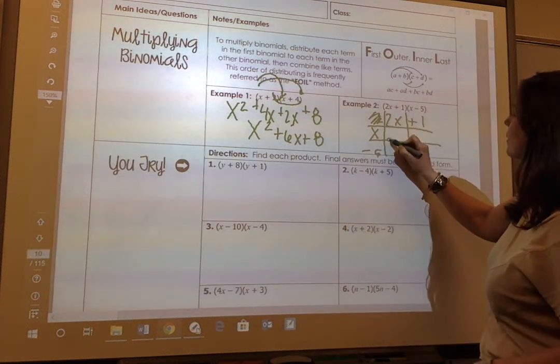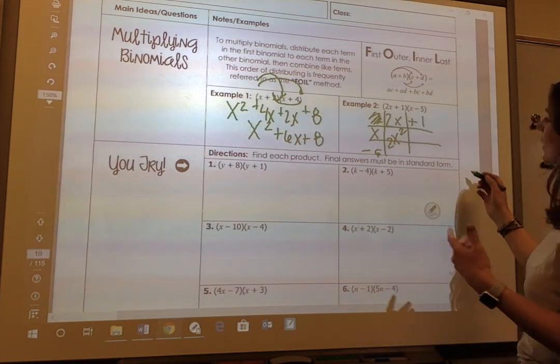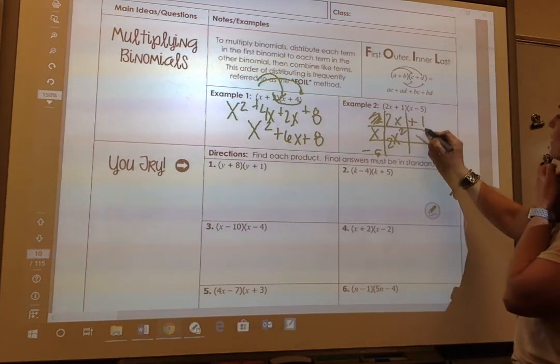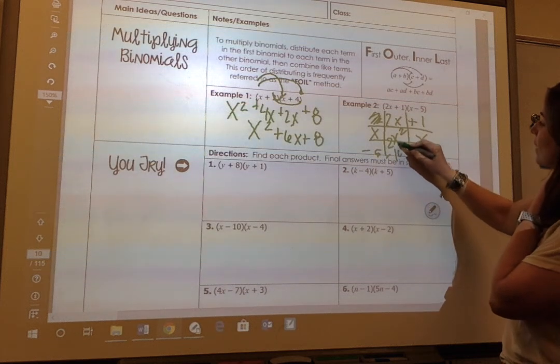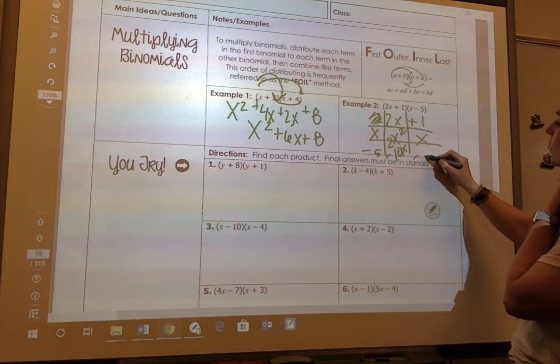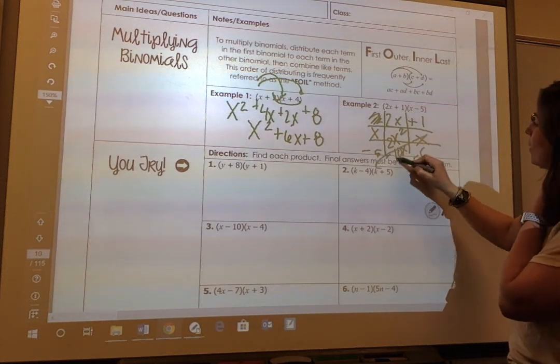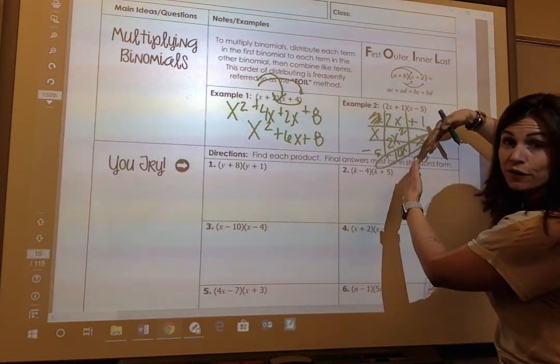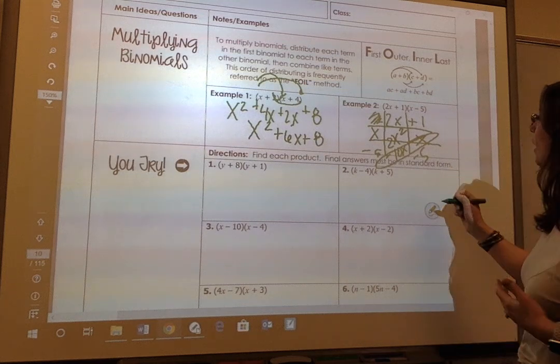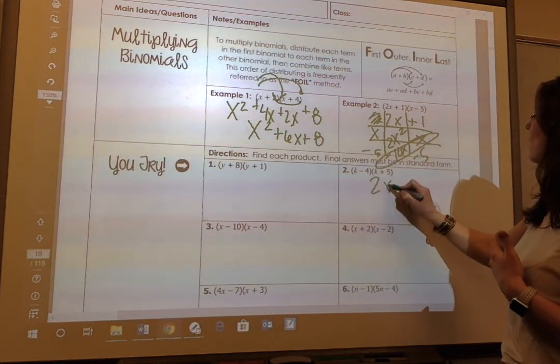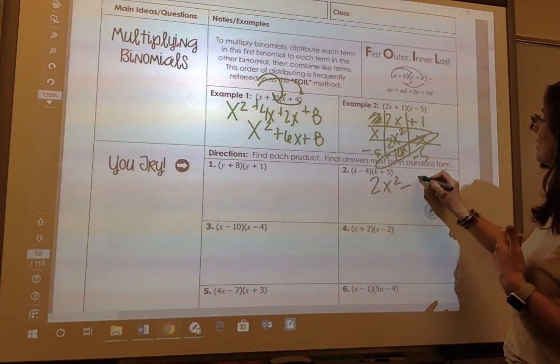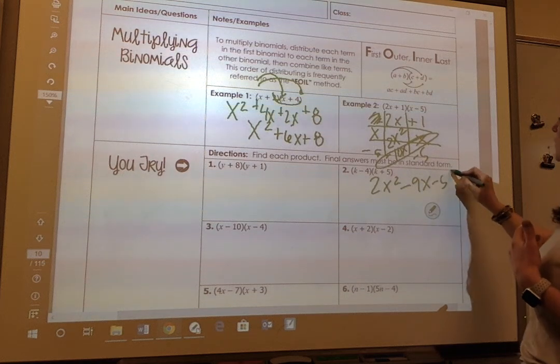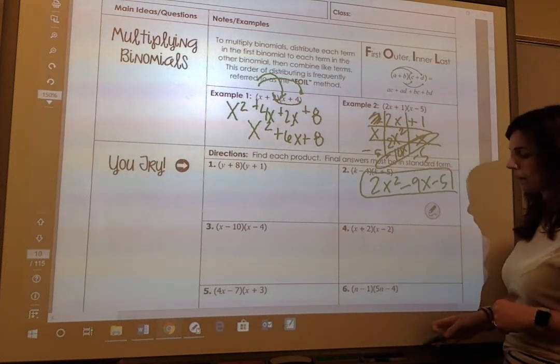2x times x is 2x squared. x times 1 is x. Negative 5 times 2x is negative 10x. And negative 5 times 1 is negative 5. Now I can circle my like terms. And just whatever, once I've filled it in, I can rewrite that polynomial. And I get 2x squared minus 9x minus 5. And that would be my final answer.